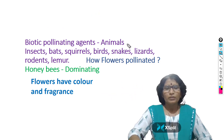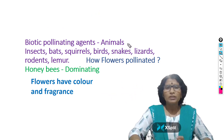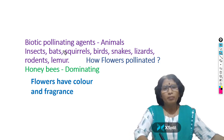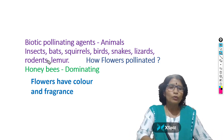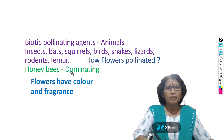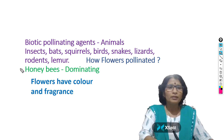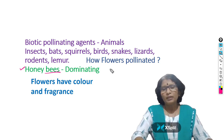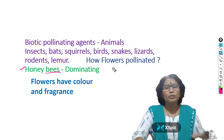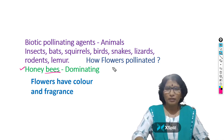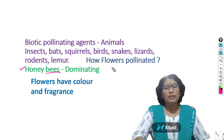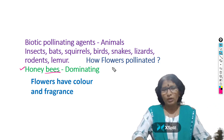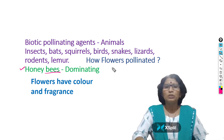Now, coming to biotic pollinating agents — here pollination takes place by animals. Which animals participate in pollination? These include insects, bats, squirrels, birds, snakes, lizards, rodents, and lemurs. Out of these animals, honeybees are the dominating ones — the majority of plants are pollinated by honeybees. When any animal visits a flower, pollen grains usually stick to their body parts — hands, legs, wings, or mouth parts. When this animal visits another flower, those pollen grains reach the flower and pollination is completed.